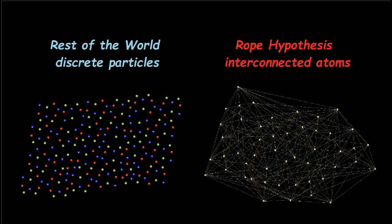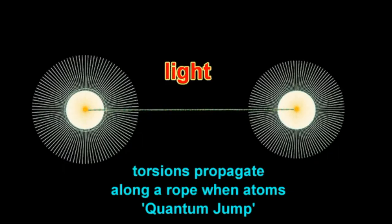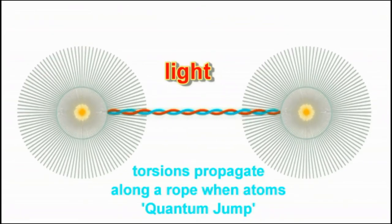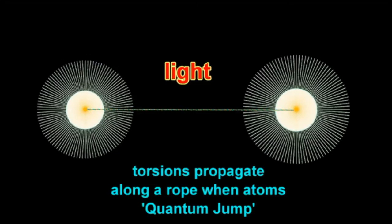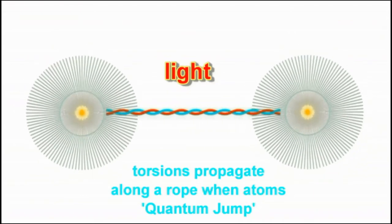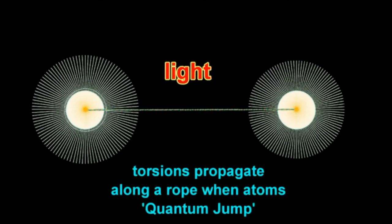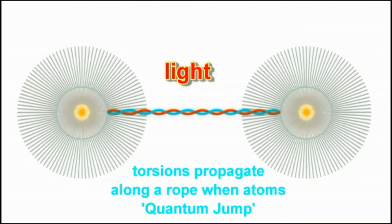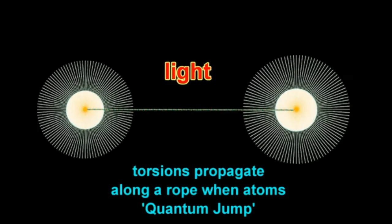They're not connected like Nassim Haramein says — he says atoms are connected, that we're connected, but he proposes concepts, talks about energy. No, we're talking about something else. We're saying we're physically interconnected, and here's the model: they're physically connected by what we call the electromagnetic rope. It's a rope that interconnects any two atoms, and it's made of two threads. One thread loops around and becomes the electron shell; the other goes straight through the center of the atom and constructs the proton. When the atom does its quantum jump it torques the rope, and that torsion is what we call light.